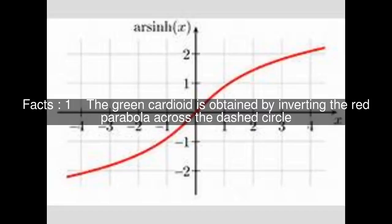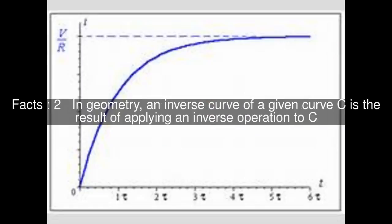The green cardioid is obtained by inverting the red parabola across the dashed circle. In geometry, an inverse curve of a given curve C is the result of applying an inverse operation to C.